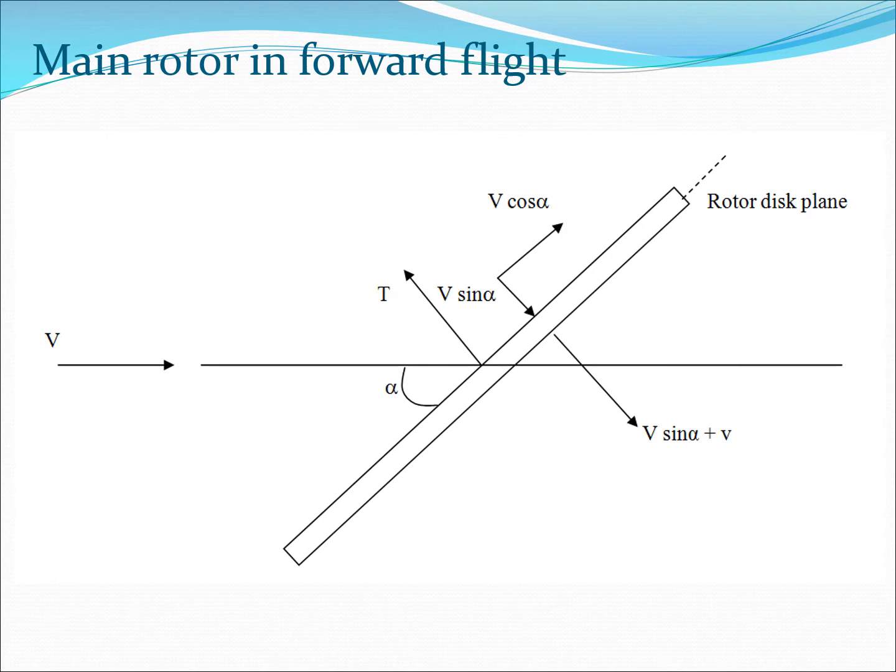We have just decomposed this velocity vector into two of its components. Now, if you think about it, the velocity of the air going through the rotor disc has two components. One component is due to forward flight, that is given by V sin α, and the second component is this component small v, which is the induced velocity, or the velocity induced by this rotor disc. Because this rotor is rotating, it essentially adds a velocity to this air coming in.